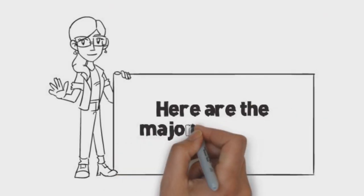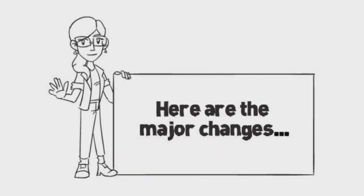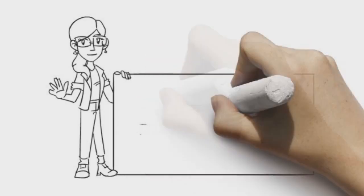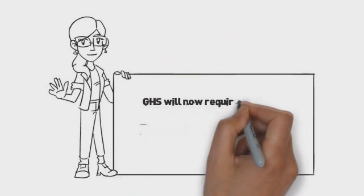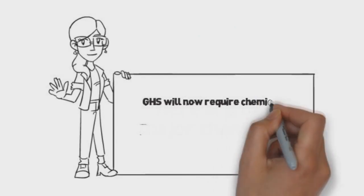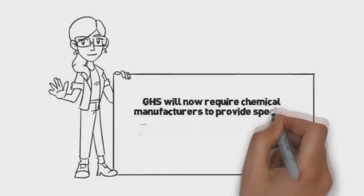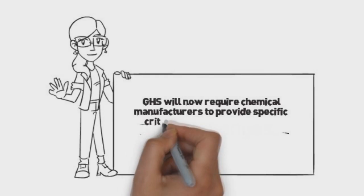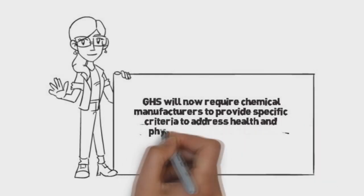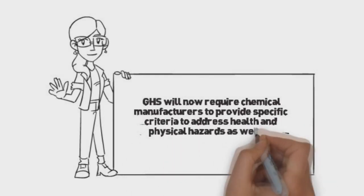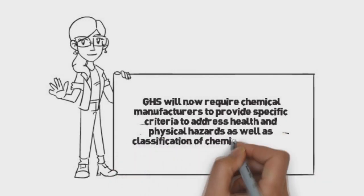The purpose of this video is to review the major changes that you are going to see. The GHS, or Globally Harmonized System, will now require chemical manufacturers to provide specific criteria to address health and physical hazards, as well as classification of chemical mixtures.